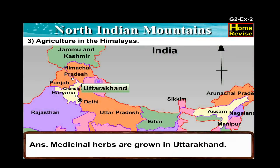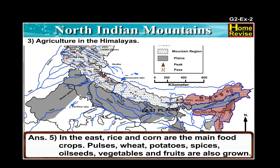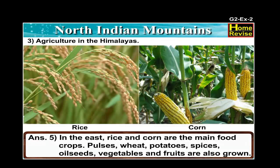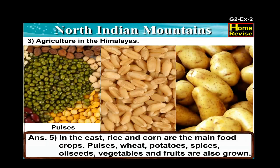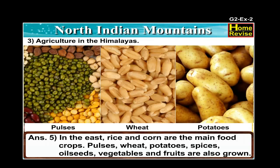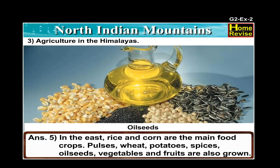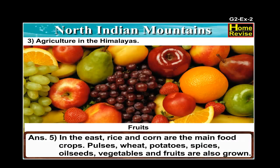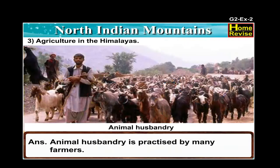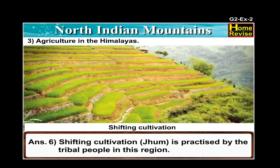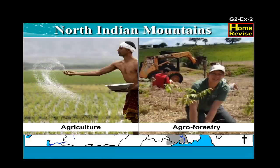Tea is grown in plantations mainly in the Darjeeling district. Plantations of cardamom are found in Sikkim and Darjeeling hills. Medicinal herbs are grown in Uttarakhand. In the east, rice and corn are the main food crops. Pulses, wheat, potatoes, spices, oil seeds, vegetables and fruits are also grown. Animal husbandry is practiced by many farmers. Shifting cultivation or jhum is practiced by the tribal people in this region.